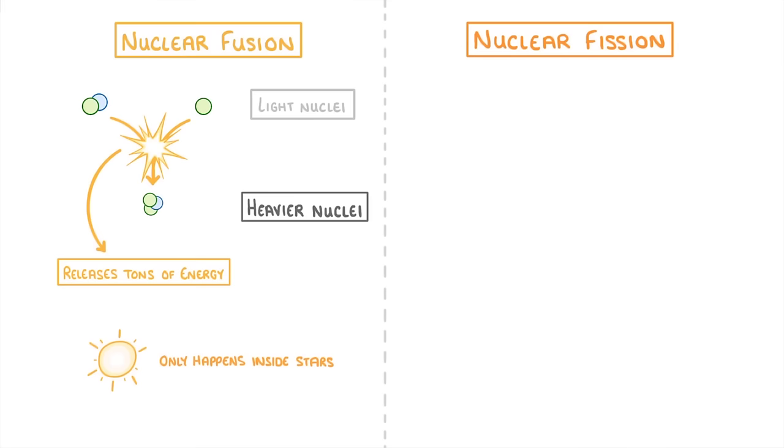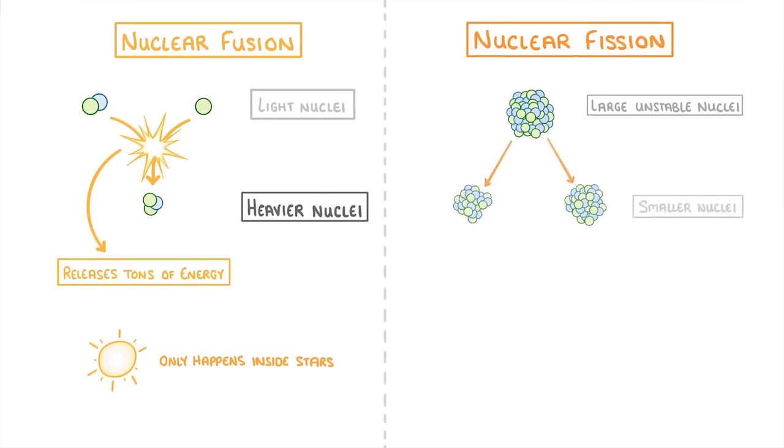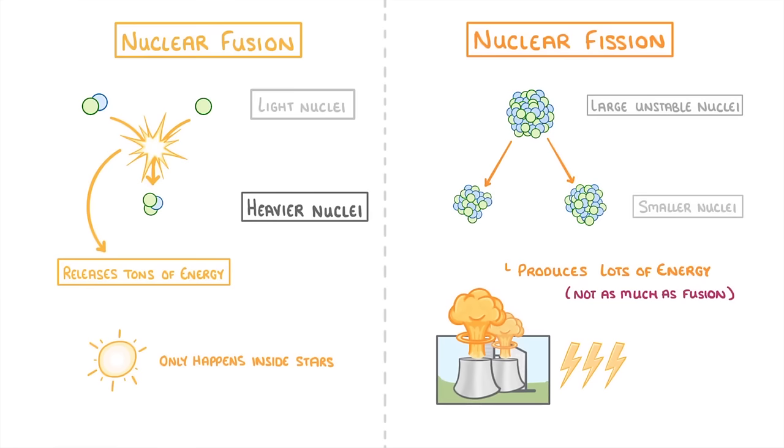Nuclear fission on the other hand is when large unstable nuclei are split into two smaller nuclei. This still produces lots of energy, but nowhere near as much as fusion. And it's nuclear fission that we use here on earth to generate electricity.